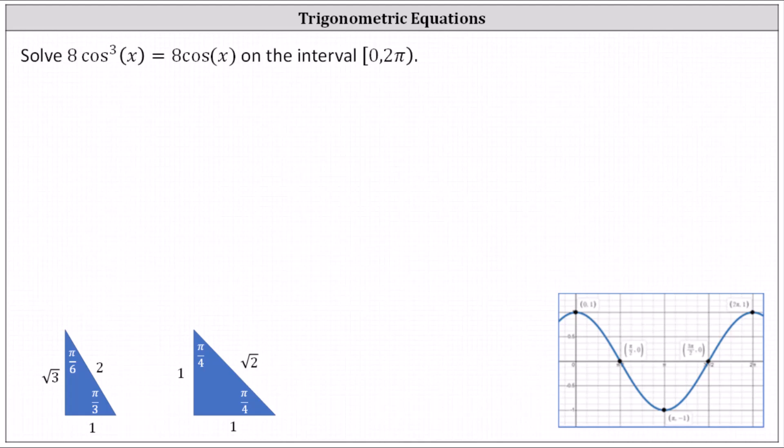Solve eight cosine cubed x equals eight cosine x on the interval from zero to two pi, where the interval is closed on zero and open on two pi. To begin, we do not want to divide both sides by cosine x, because by doing this, we will lose a solution.